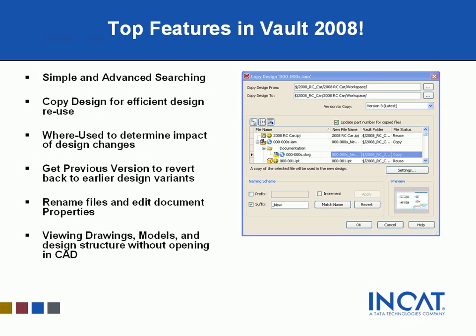The top features in Vault 2008 include the ability to find data through simple or advanced search tools. Once that data is found, you can copy it for efficient design reuse on new jobs based on existing data. Through day-to-day engineering, Vault lets you see exactly what will be affected when you change any part or assembly. If a part is used in more than one design, you'll see that immediately. You can also revert back to earlier versions of designs when needed.